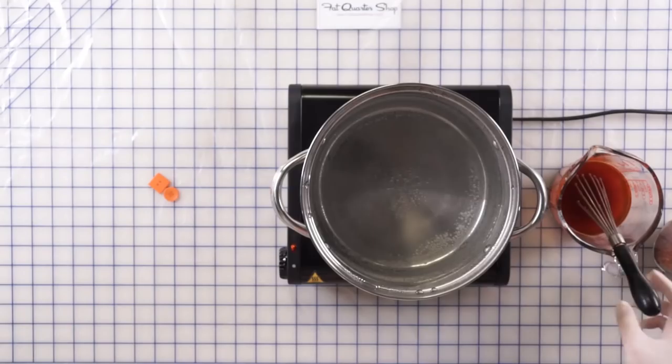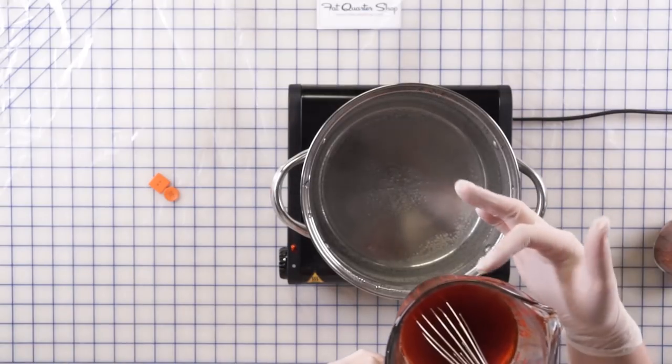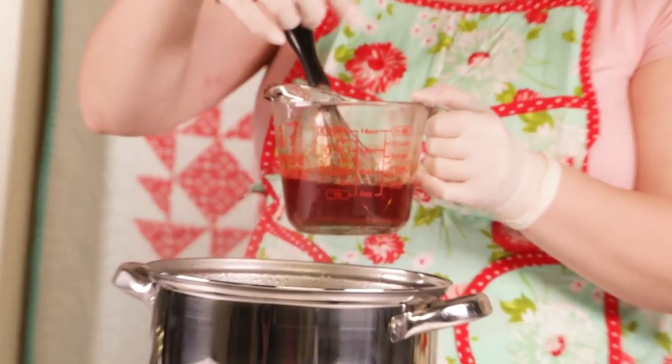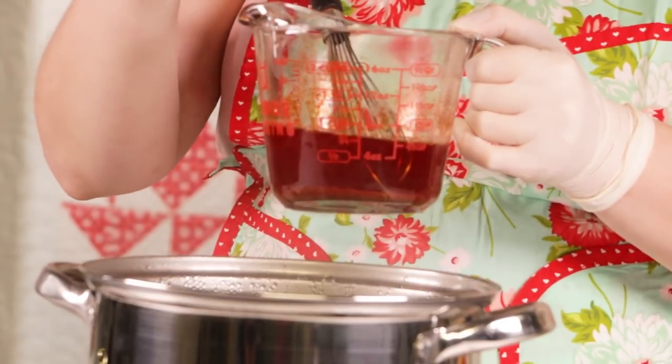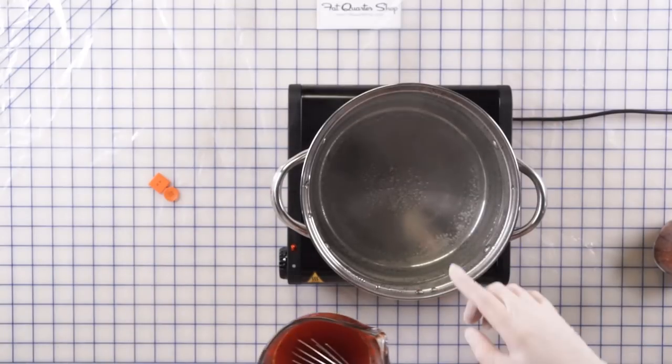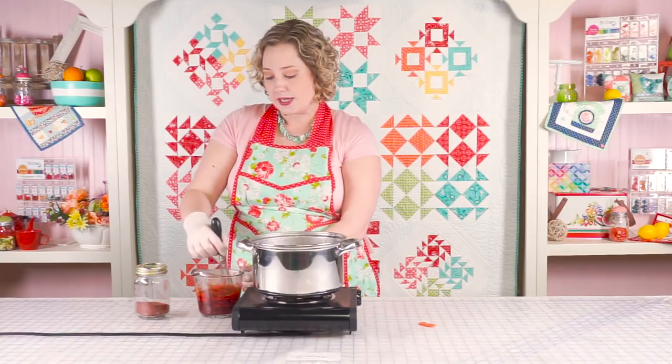As you can see, there's kind of some splotchiness on the edge of the measuring cup and there are some pieces of salt floating in the dye. So I wouldn't want to dump this into my pot right now because then it would leave spots in my buttons. So I'm going to use the whisk and mix up my dye.